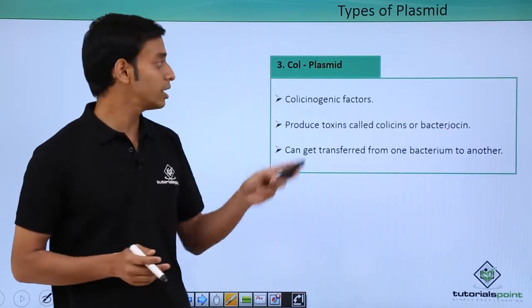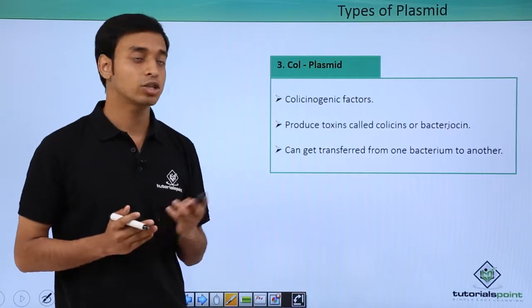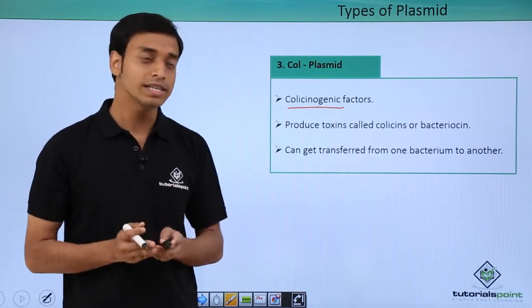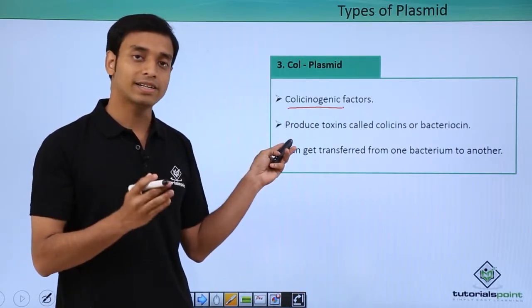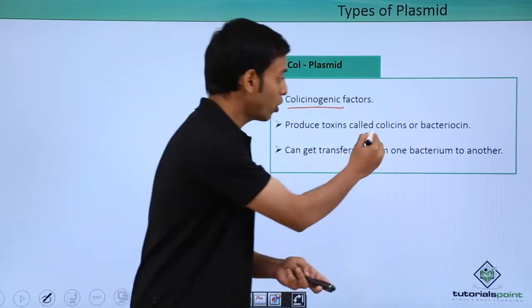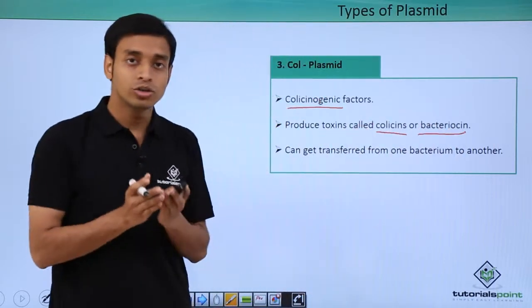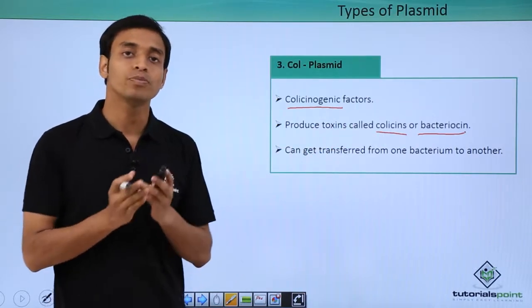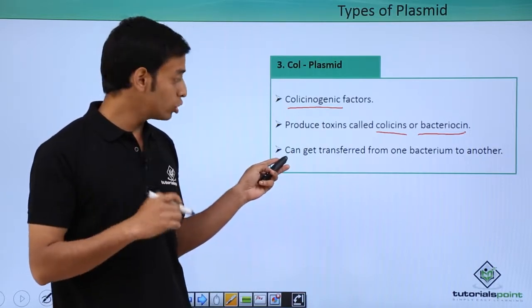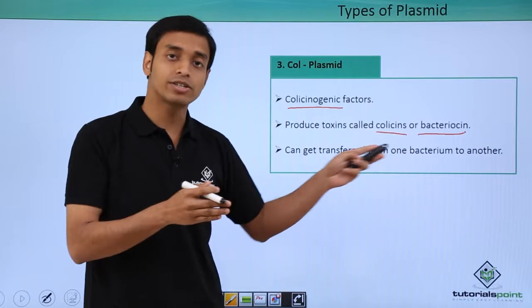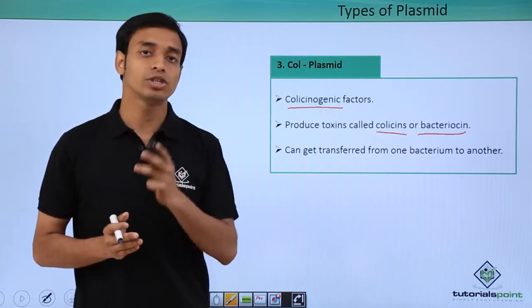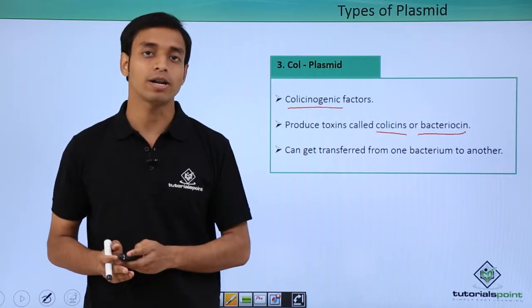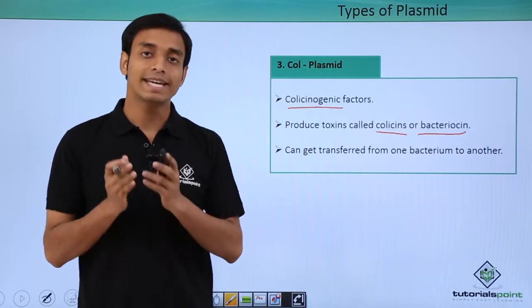The third type is known as the Col plasmid, named for the presence of colicinogenic factors. These factors produce a toxin known as colicin or bacteriocin. These plasmids carry the genes to produce colicin or bacteriocin. Col plasmids can also be transferred from one bacterium to another — a property shared with the F plasmid and the R plasmid, so all three types can be transferred between bacteria.